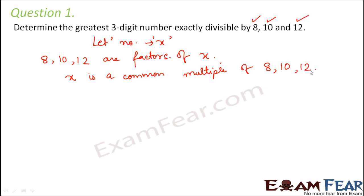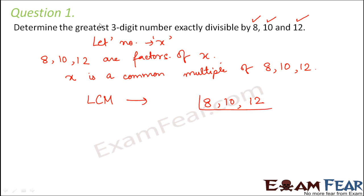Now the question asks us to find out the greatest 3-digit number which is exactly divisible by 8, 10 and 12. So basically we have to find x which is a common multiple of 8, 10 and 12. We find the common multiple by using the least common multiple, that is by LCM. You might ask that the question says greatest 3-digit number, but with LCM I will be able to find the least common multiple — that is correct. But let us first find the least common multiple, and once we know it, we will find how to get the greatest 3-digit multiple.